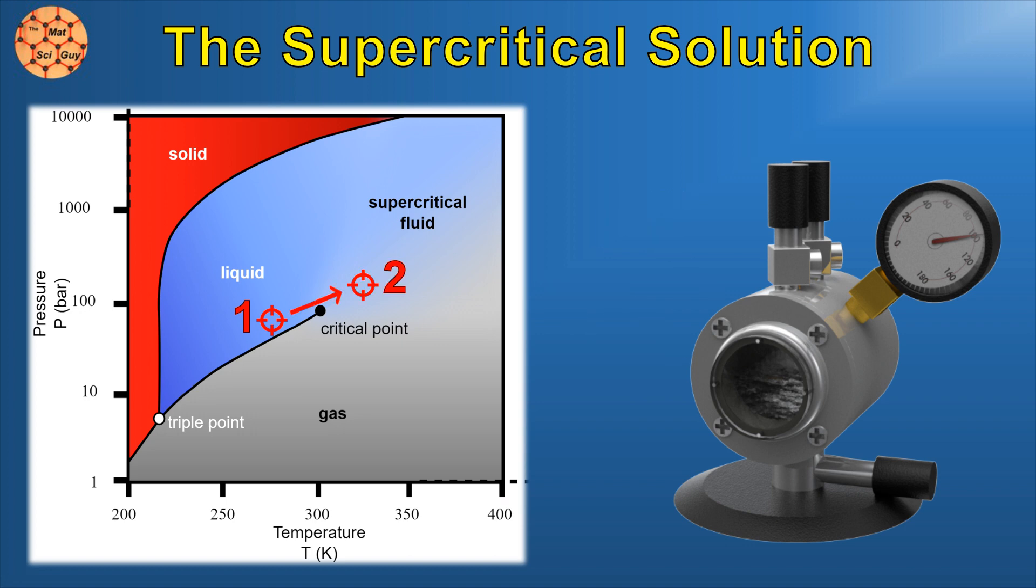Then, the temperature can be increased a bit to make the CO2 supercritical, and finally, we can slowly vent the CO2 to atmospheric pressure, eventually exchanging with air in the process. Voila!